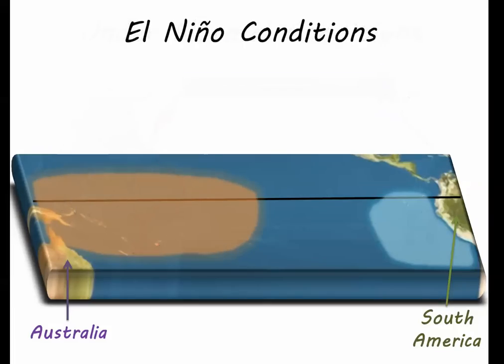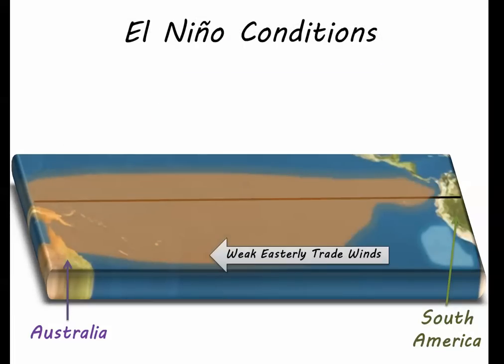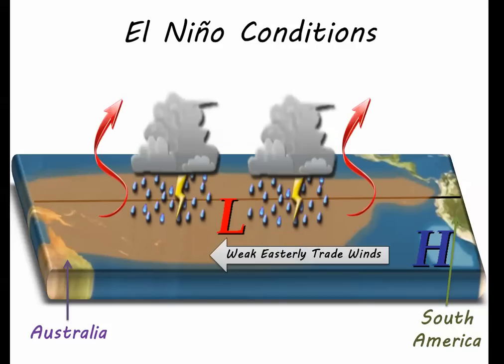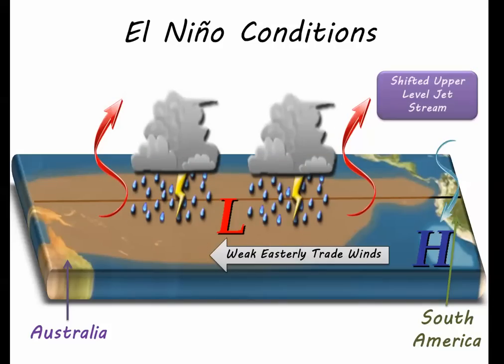Now for the warm phase of ENSO, or El Niño. Weaker easterly trade winds cause less upwelling along the South American coast, allowing for warmer water to expand further east toward South and Central America. The area of low pressure expands with the warmer water, and the area of high pressure shrinks. Thunderstorm activity expands with the warmer water to the east, which then leads to a shifted upper level jet stream.